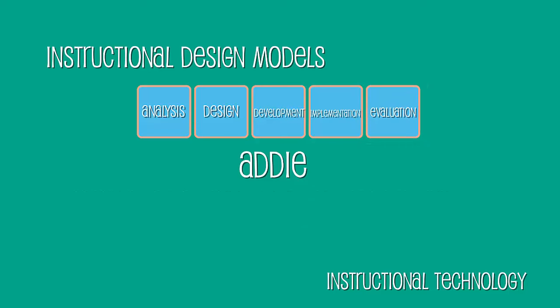So there you have it — the five phases of the ADDIE model of instructional design. Remember there are five phases: Analysis, Design, Development, Implementation, and Evaluation. We'll be coming back to all of these phases throughout the course, as well as looking at other models and variations on the ADDIE approach.